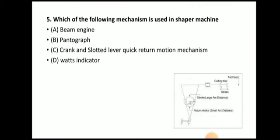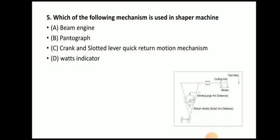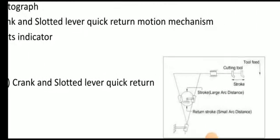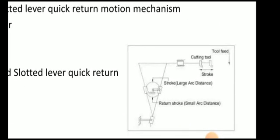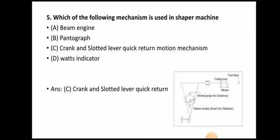Next question: which mechanism is used in a shaper machine? The answer is the crank and slotted lever quick return motion mechanism. In a shaper machine, cutting takes place only during the forward stroke and no cutting takes place during the return stroke, so we need to quickly return back — hence the crank and slotted quick return motion mechanism is used.